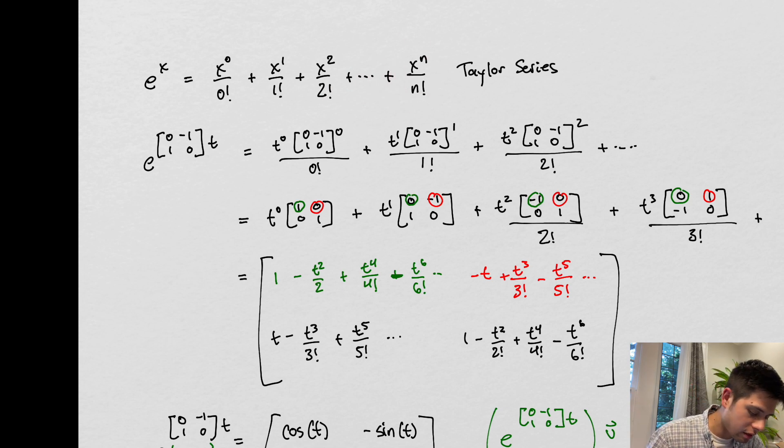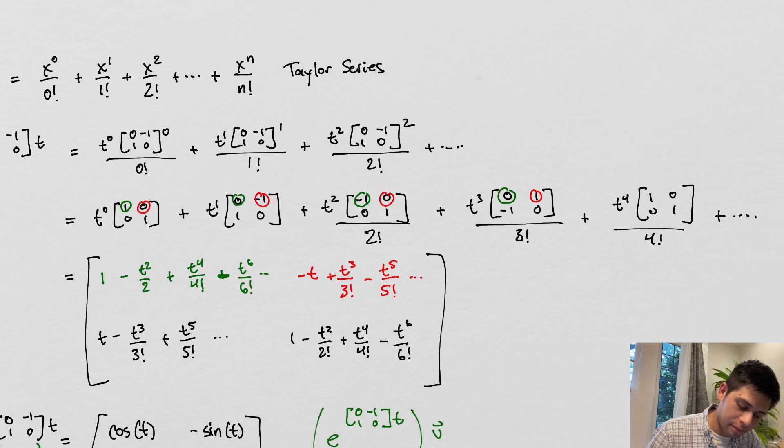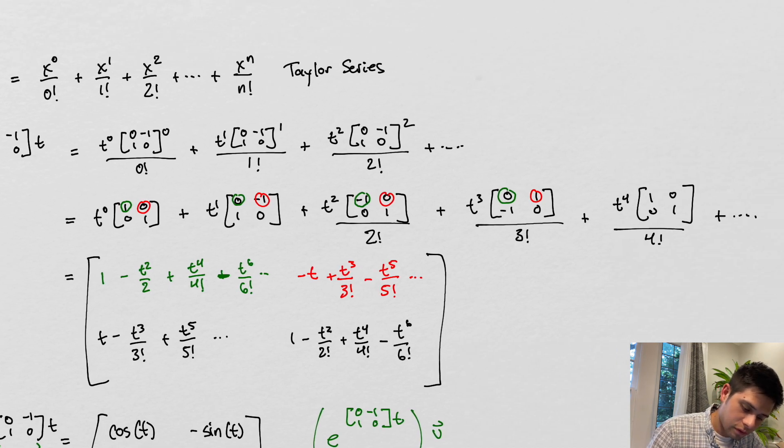And this can be rewritten as a sum over n, x^n over n factorial. So all of this equals a sum.